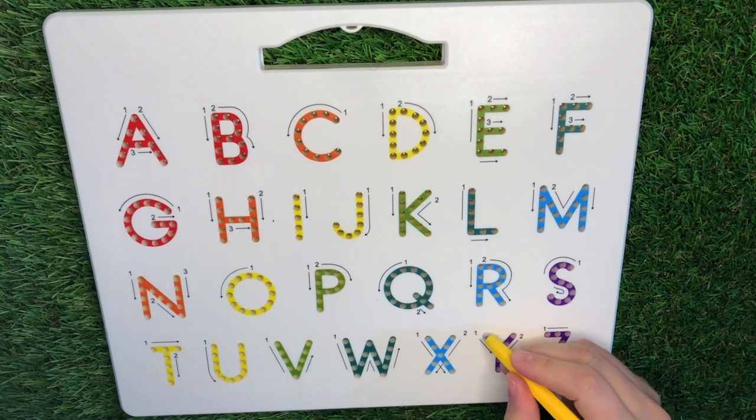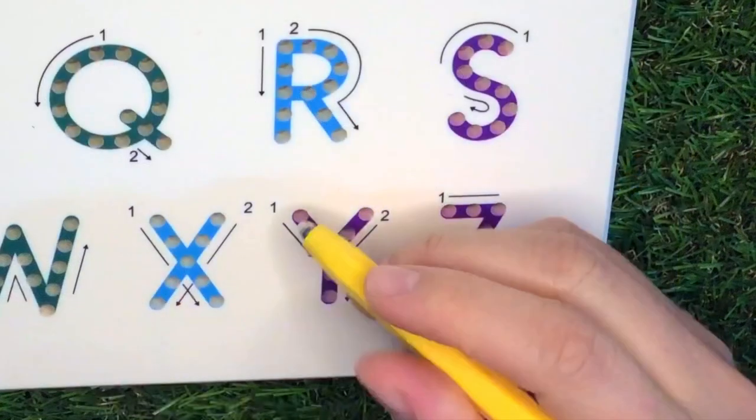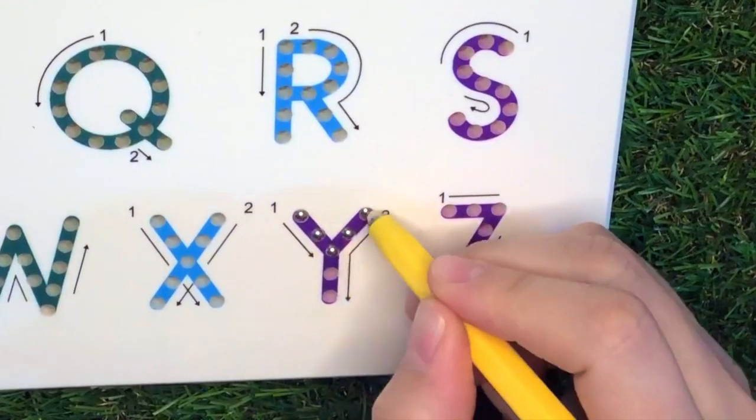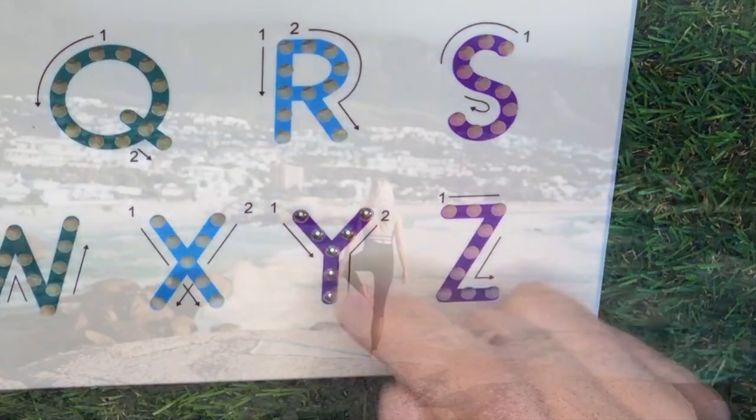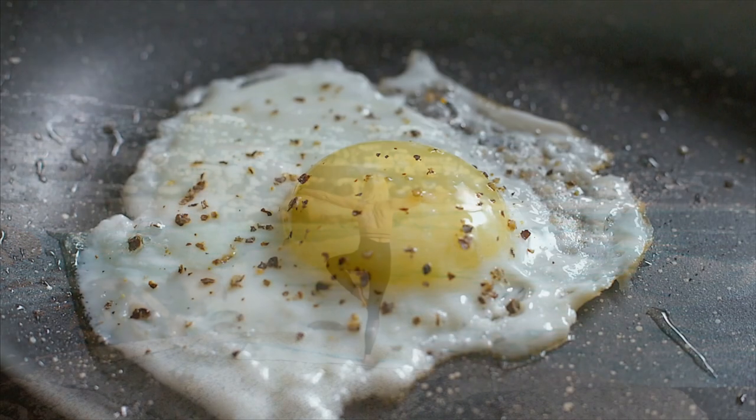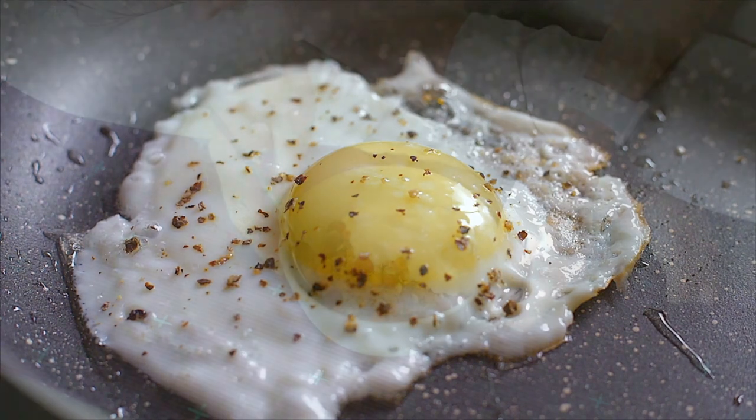Letter Y. Slant in, slant, and down. Y is for yoga, yoke, and yogurt.